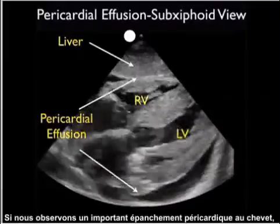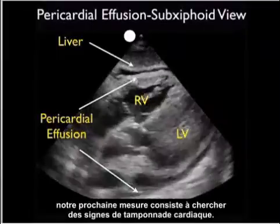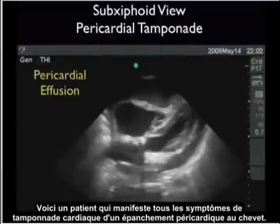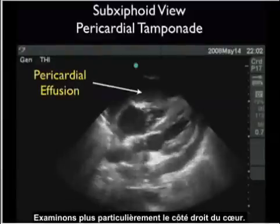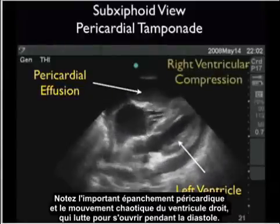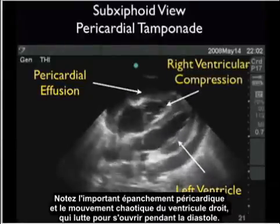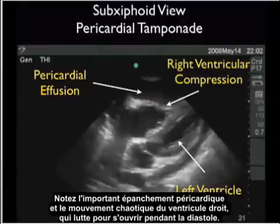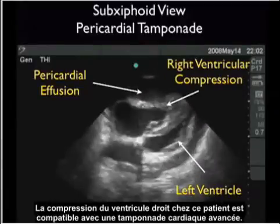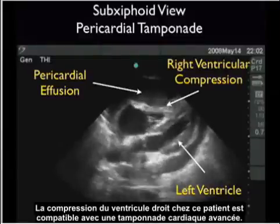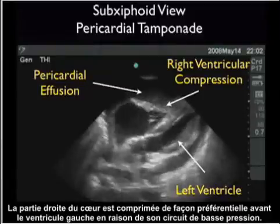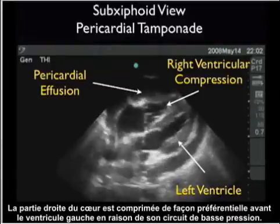If we see a large pericardial effusion on bedside echo, our next move is to look for signs of cardiac tamponade. Here's a patient who manifests all the signs of cardiac tamponade on bedside echo. Let's look specifically at the right side of the heart. Notice the very large pericardial effusion and note the chaotic movement of the right ventricle as it struggles to open during diastole. The compression of the right ventricle in this patient is consistent with advanced cardiac tamponade. The right side of the heart is preferentially compressed before the left ventricle due to its lower pressure circuit.